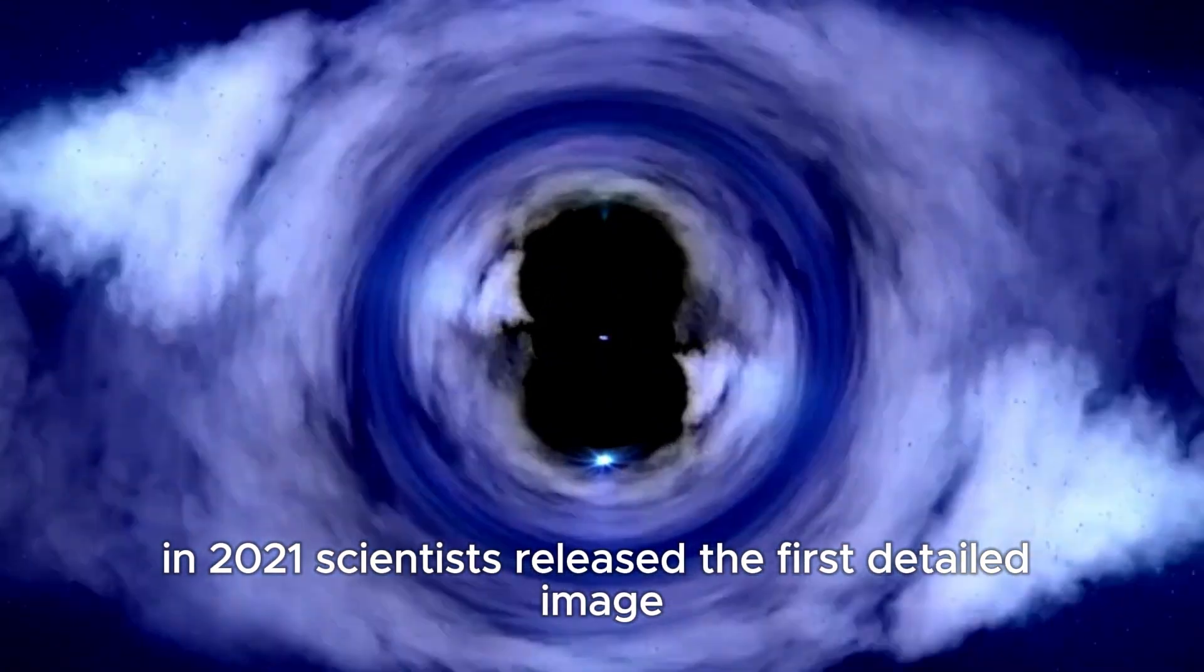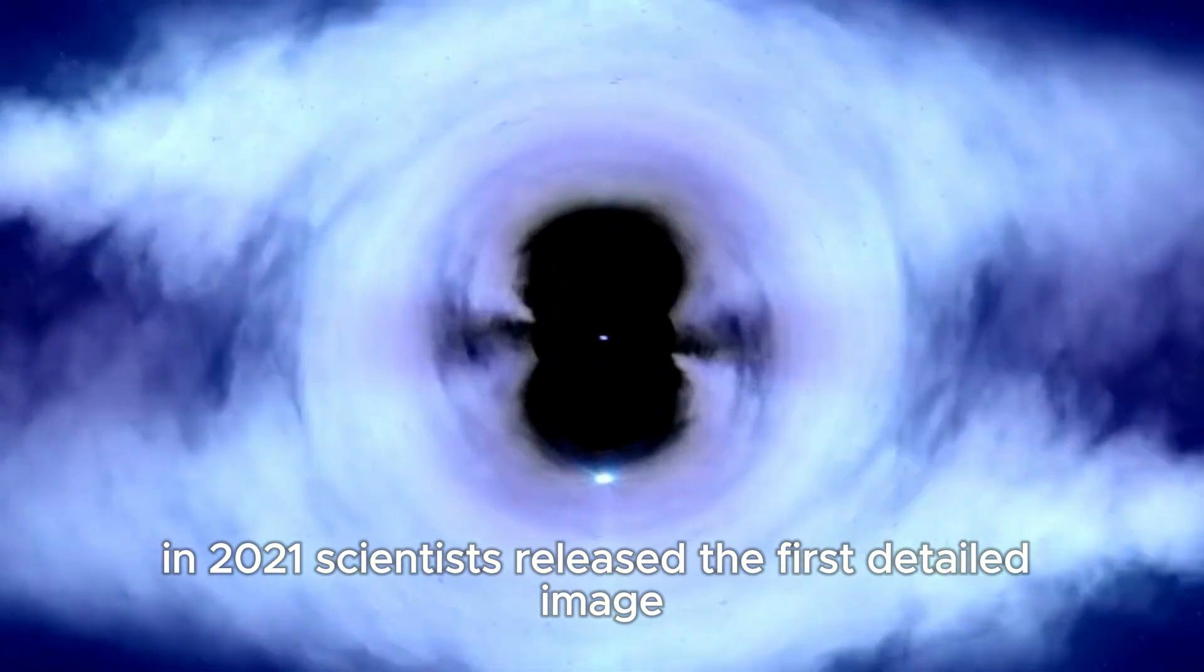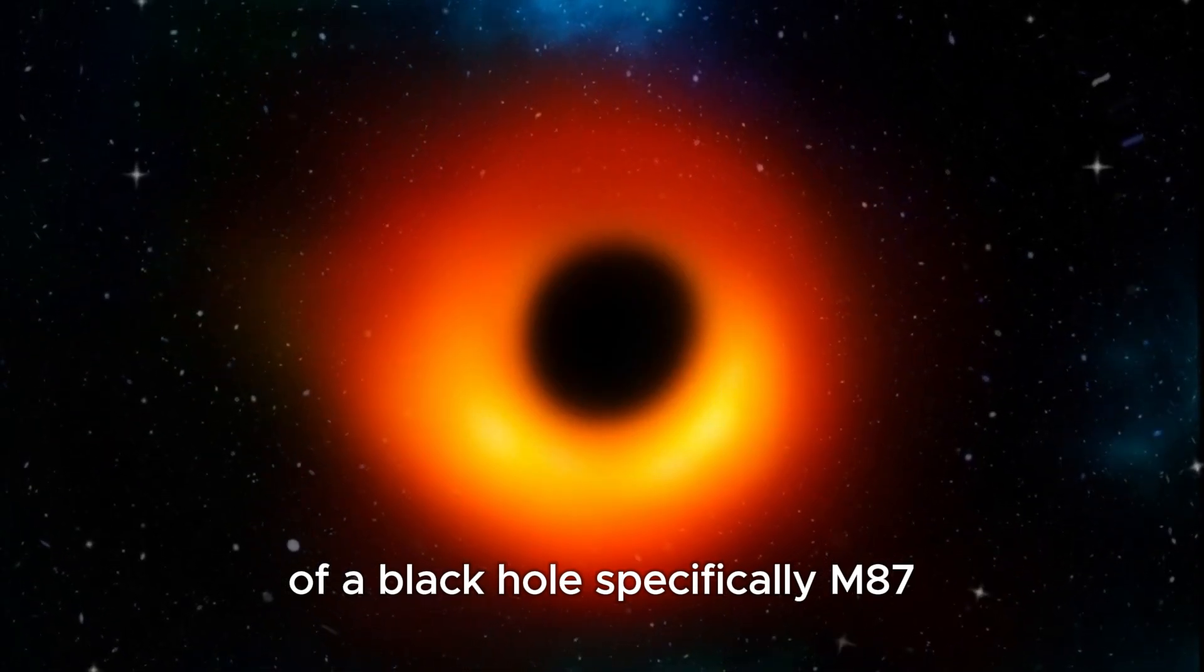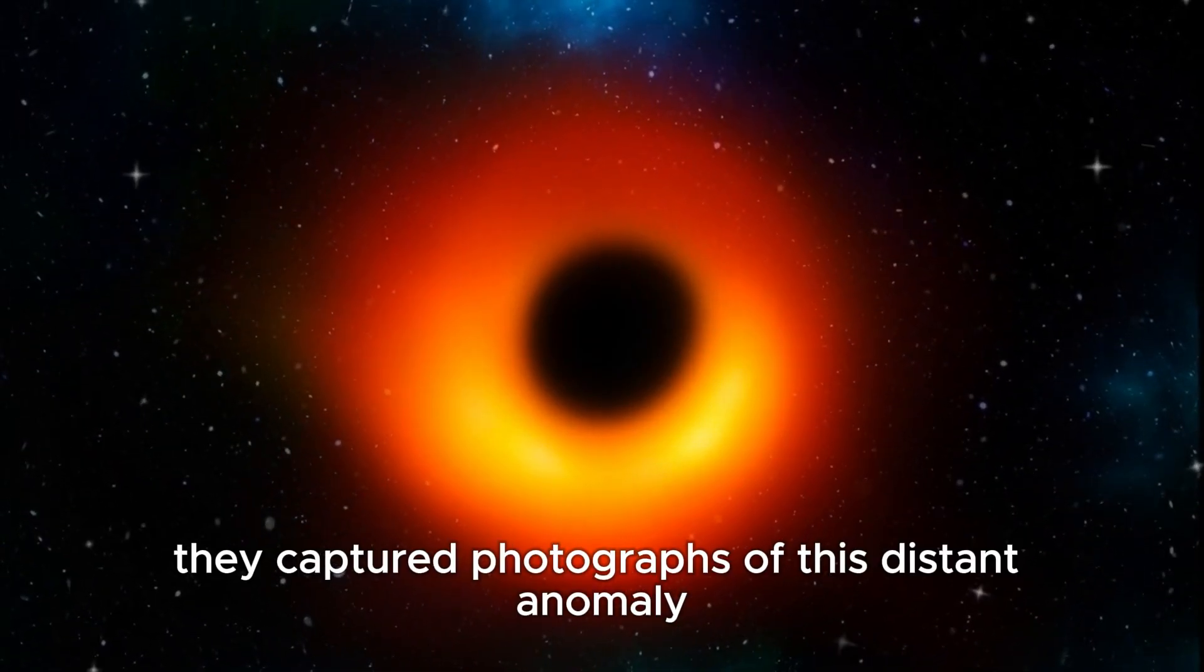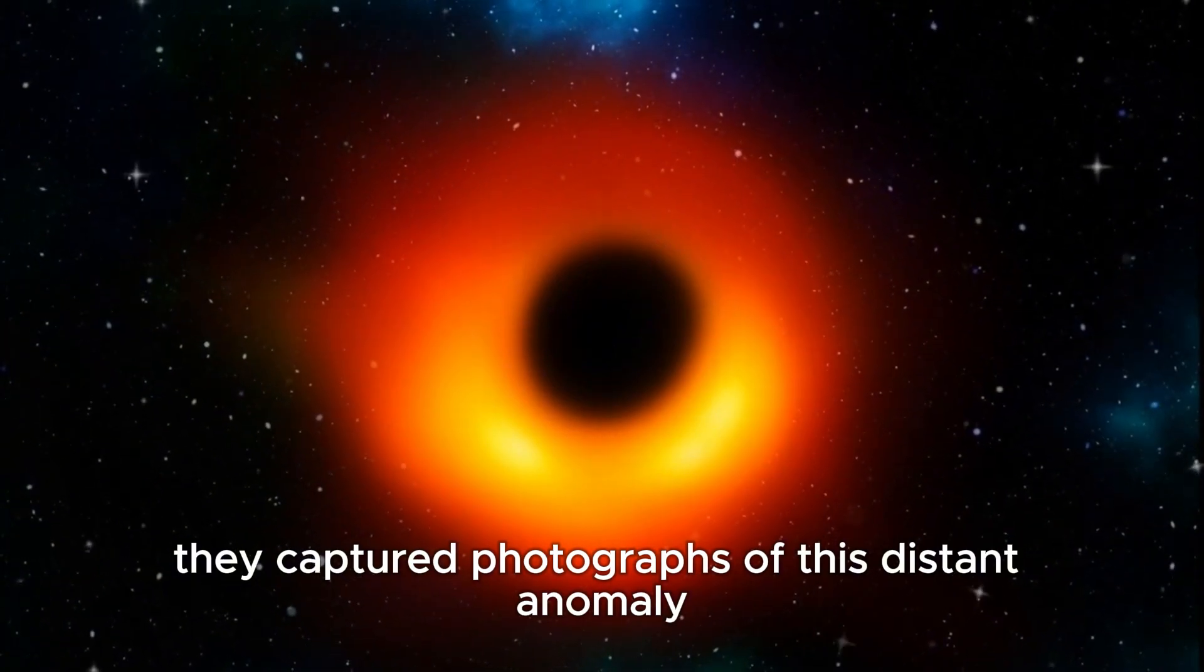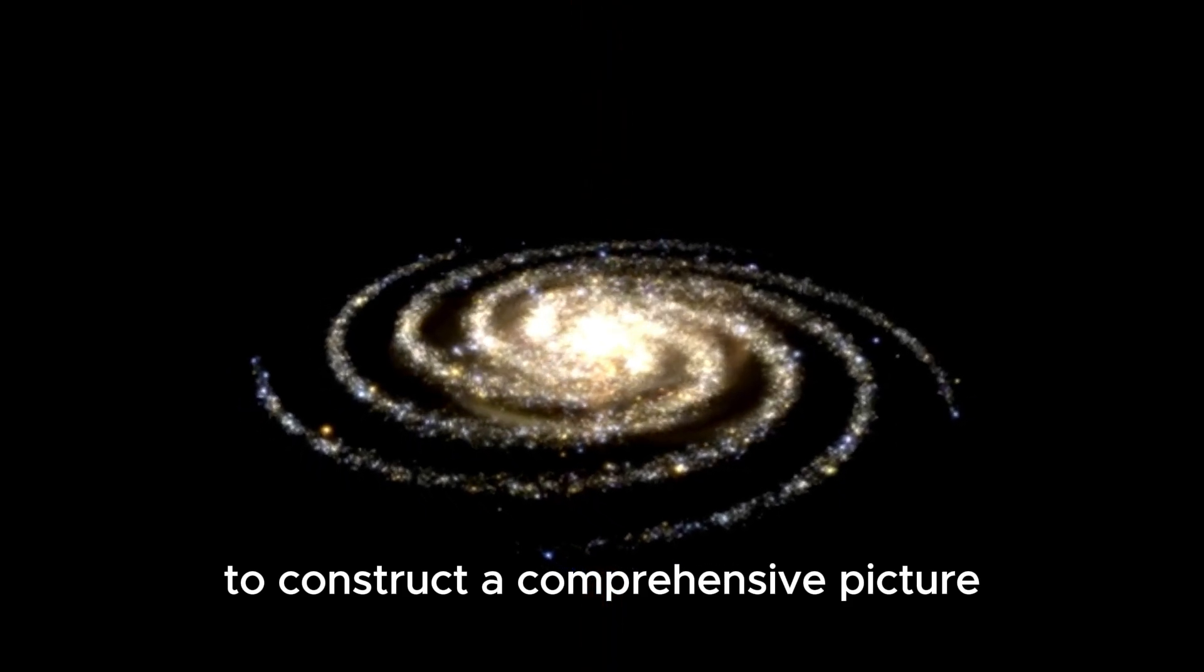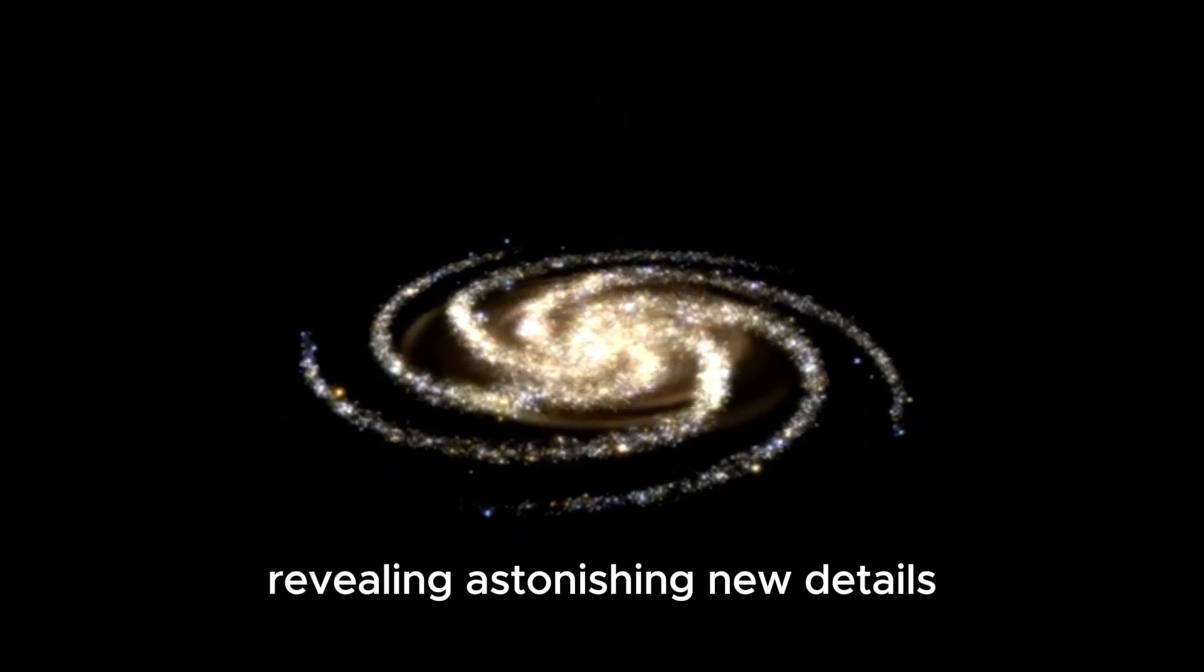In 2021, scientists released the first detailed image of a black hole, specifically M87. Night after night, they captured photographs of this distant anomaly. These individual images were then merged to construct a comprehensive picture, revealing astonishing new details.